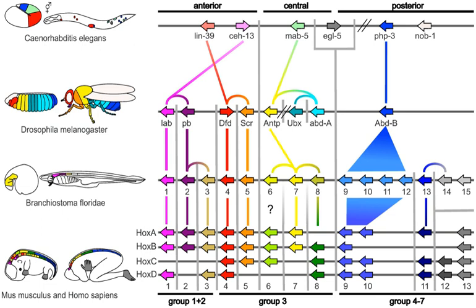The embryologist Carl Ernst von Baer opposed this, arguing in 1828 that there was no linear sequence as in the great chain of being based on a single body plan, but a process of epigenesis in which structures differentiate. Von Baer instead recognized four distinct animal body plans: radiate, like starfish; molluscan, like clams; articulate, like lobsters; and vertebrate, like fish. Zoologists then largely abandoned recapitulation, though Ernst Haeckel revived it in 1866.